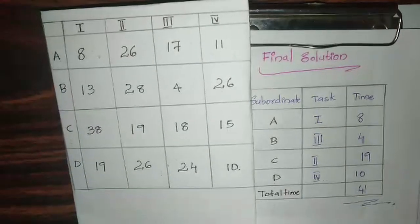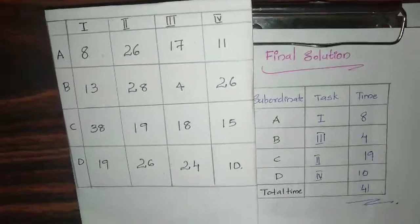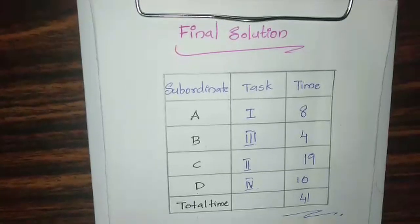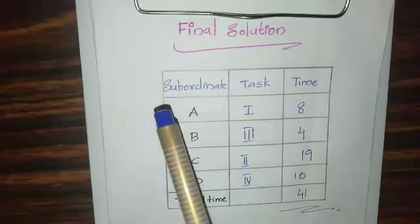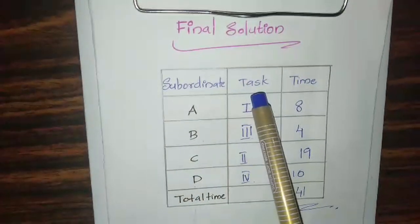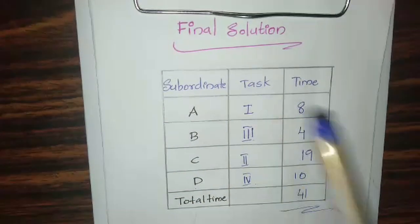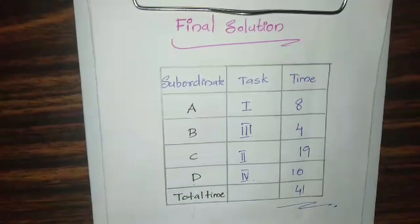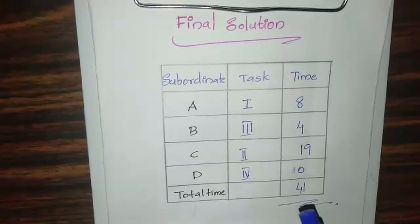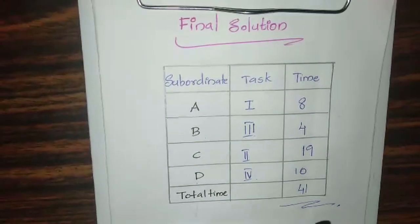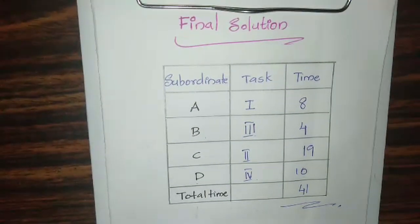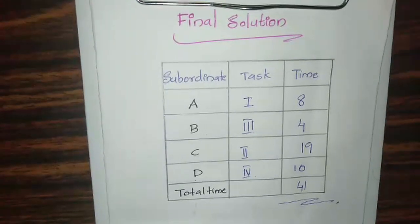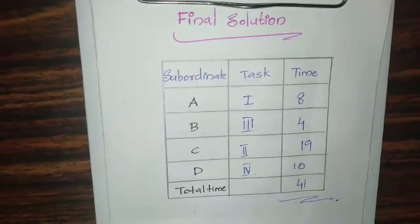This is the final answer. We have assigned one job to each worker and this minimizes the total man-hours. This is the way to solve the assignment problem by the Hungarian method. Hope you all understood the topic. Thank you.